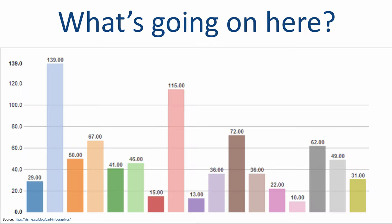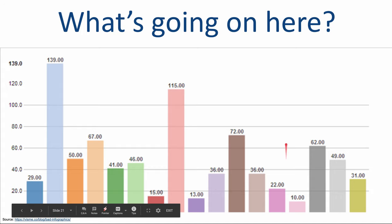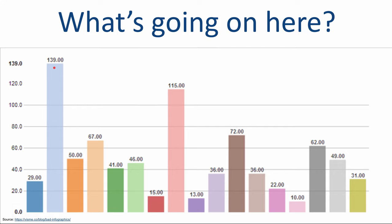What's going on with this one? A couple of issues immediately: it's not labeled, so we don't know what each category is. There are a lot of different colors, which isn't necessarily a bad thing, but it's hard to tell the relative size of things because the bars aren't in ascending or descending order. Traditionally, unless you have a specific reason not to, you'd want to go highest to lowest or lowest to highest so you can see the relative differences between categories.